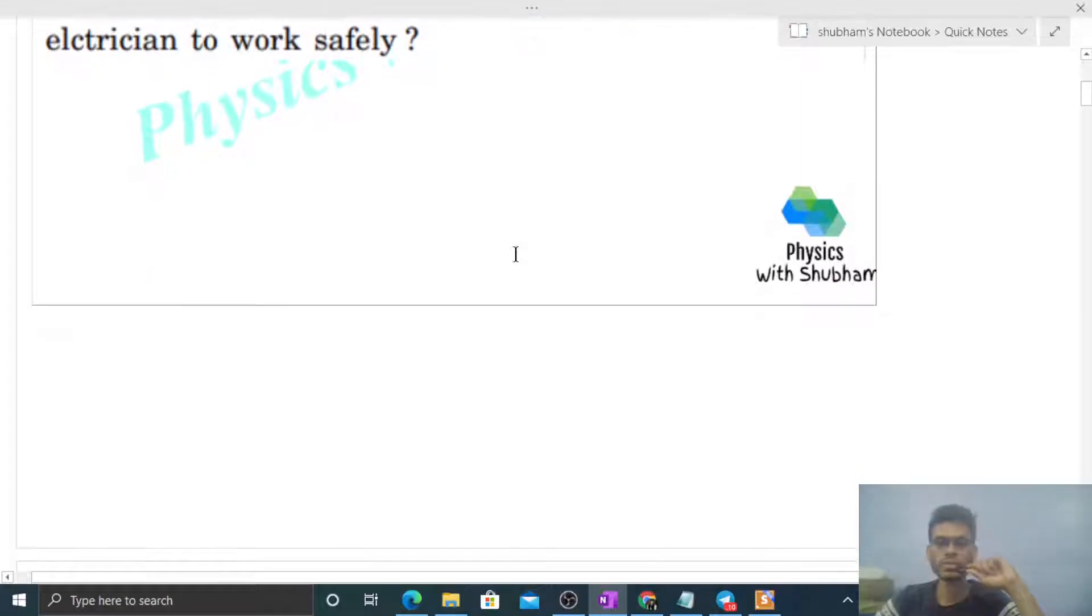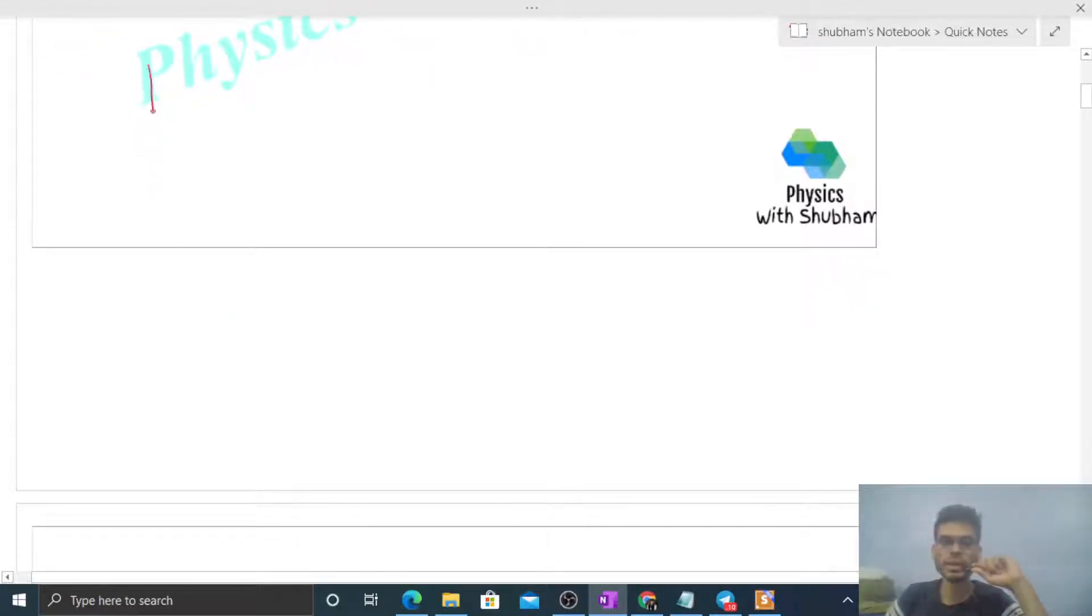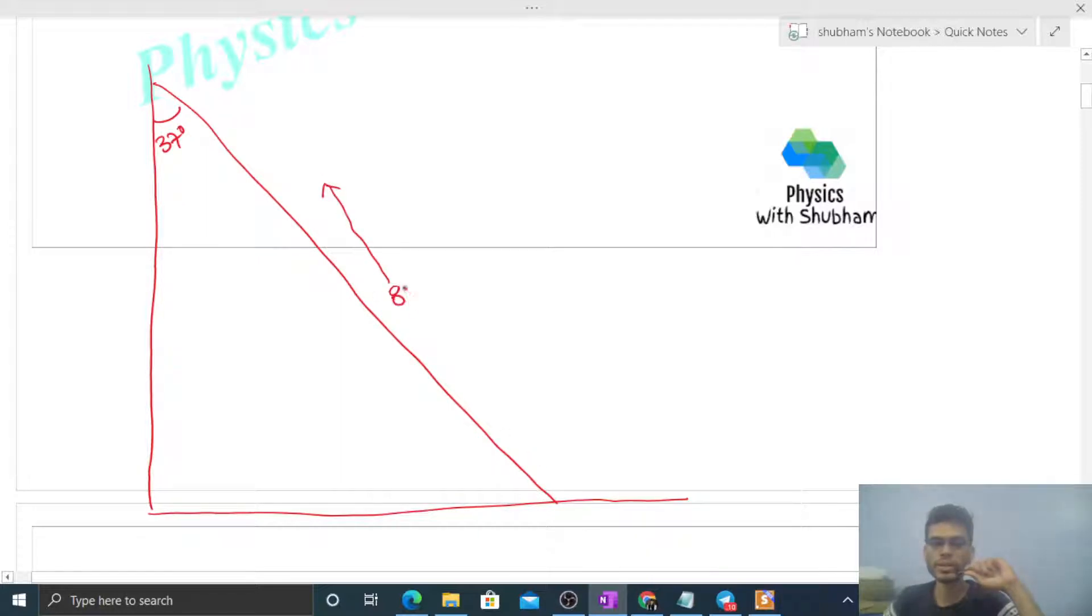So see, there are many data given. So first we draw the diagram. This way we have a vertical wall and a horizontal ground. And this way we have a ladder. This angle is 37 degree. And at the lower end, say 8 meter distance, something like this, an electrician. And total length of this ladder is 10. So the length of this ladder is 2 meter. Now we have a normal reaction and friction force value to find out by the ground. So what do we need to do? First we have a free body diagram.